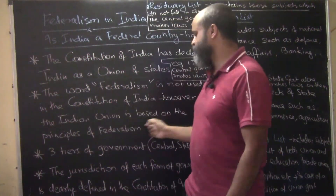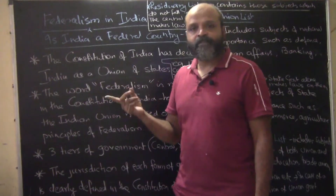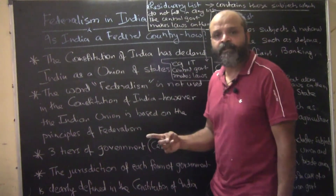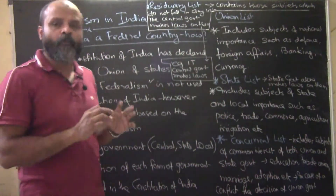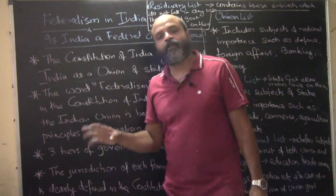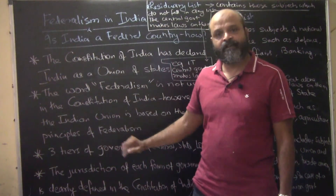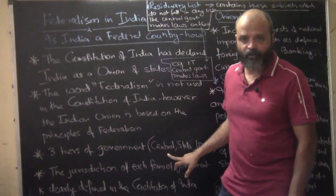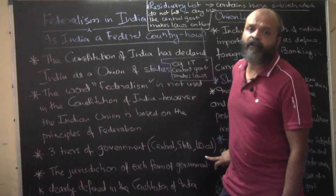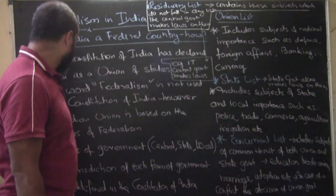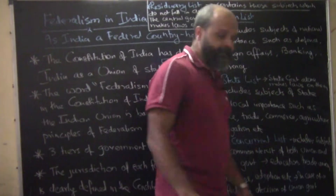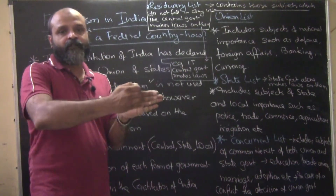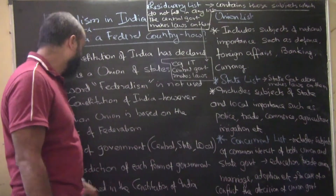We have three tiers of government. The reason why we say India is a federalist nation is because it has more than one tier. If any form of government has more than one layer of governance, it is called a federal state. So according to the principles of federalism, India has three layers: central or Union level, state level, and local level. The jurisdiction of each form of government is clearly defined in the Constitution.